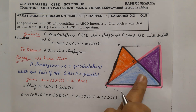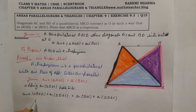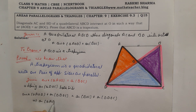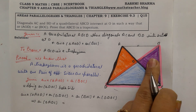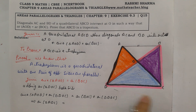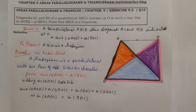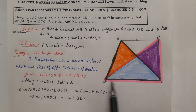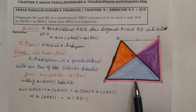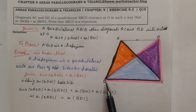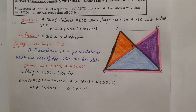Since AOD plus DOC gives triangle ADC, and BOC plus DOC gives triangle BDC, we have: area of triangle ADC equals area of triangle BDC. Both triangles share the common base DC, as seen in both the black-border and pink-border triangles in the figure.